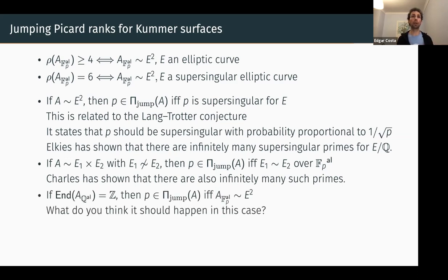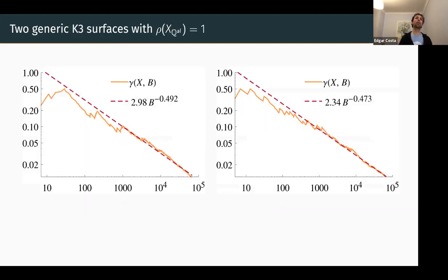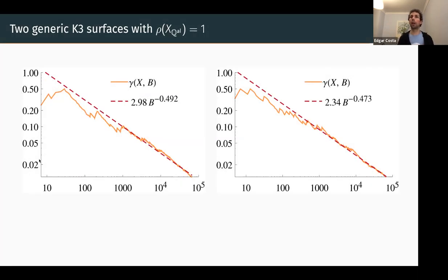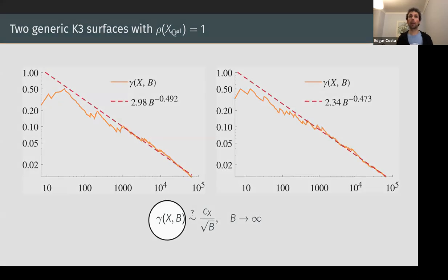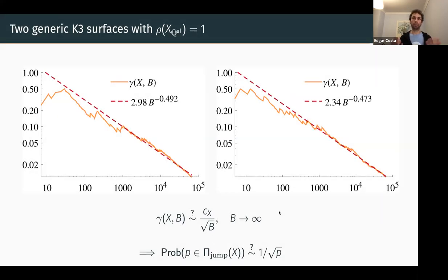Let me just get to the upshot as fast as I can. Let's do some numerical experiments and see what the density is for a generic K3 surface with rank one. What you observe: on the bottom is the upper bound on primes, and on the y-axis is the proportion. I pick two generic K3 surfaces and observe smooth Lang-Tate behavior. By reverse engineering, gamma seems to behave as some constant times the square root of p.